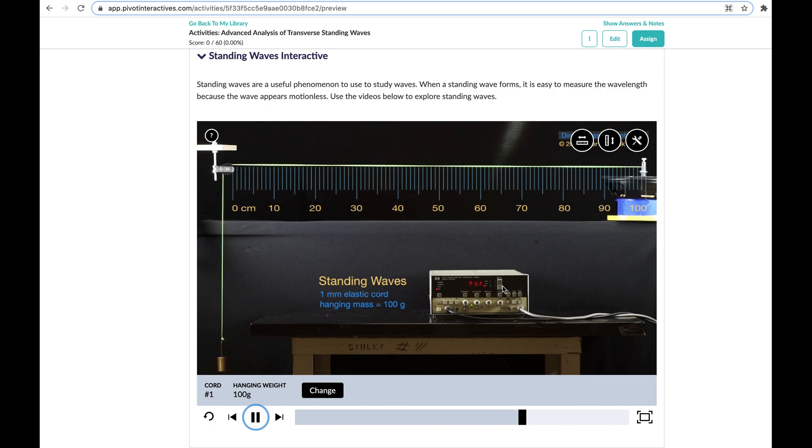And then four antinodes. And then it's going to show five antinodes. And then finally it's going to go up to six antinodes. There we go. So it's kind of hard to see, but you can see it there.